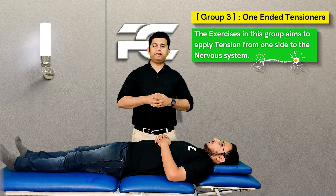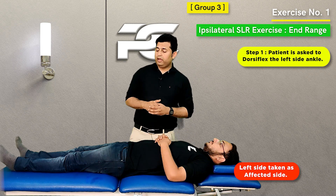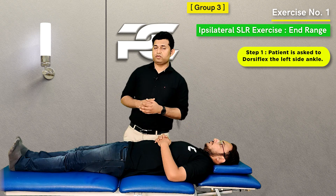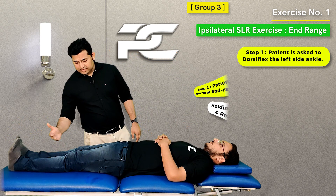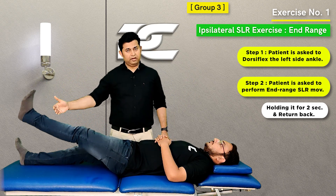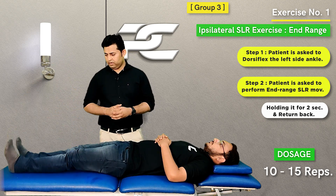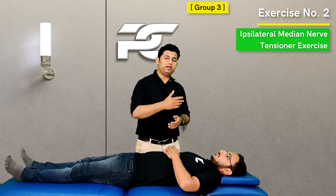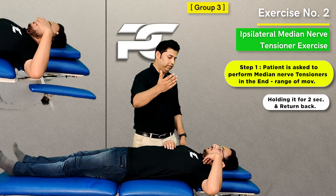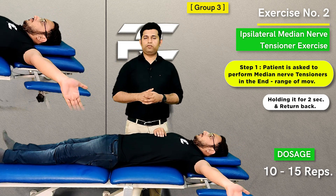The third group of exercises are known as the one-ended tensioners, and we are going to demonstrate two important exercises. For the first exercise, the patient's head and neck remain neutral and the therapist instructs the patient to dorsiflex the ipsilateral ankle. Considering it is a left-side predominant cervicogenic headache, the left ankle is dorsiflexed, then the patient takes the leg into the end range of SLR, taking the nervous system into tension, maintaining for two seconds, and returning back — 10 to 15 repetitions. The second exercise is the ipsilateral median nerve tensioner: the therapist performs left-side median nerve tensioners taking the elbow, wrist, and fingers into end-range extension, maintaining for two seconds, returning back, for 10 to 15 repetitions.